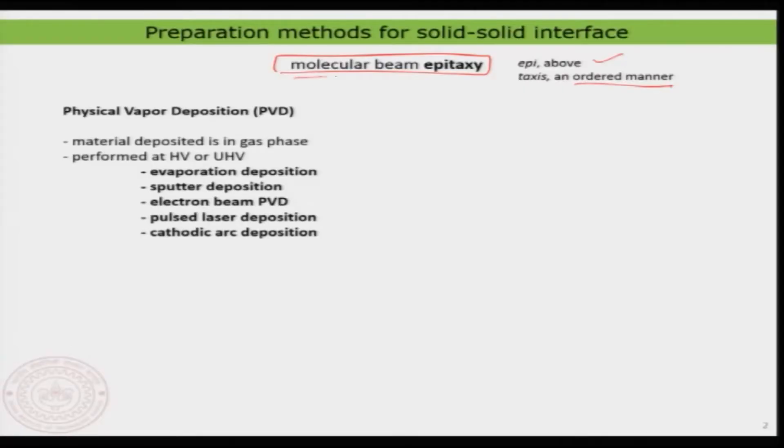Why is it called molecular beam? In the epitaxial process you are going to generate a beam of molecules or atoms that will eventually get deposited on the surface. That is why it is called molecular beam — atoms are coming one by one, or if you are depositing molecules, molecules are coming one by one onto the surface. Therefore it is called molecular beam epitaxy.